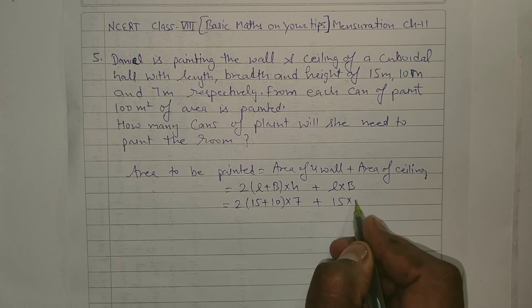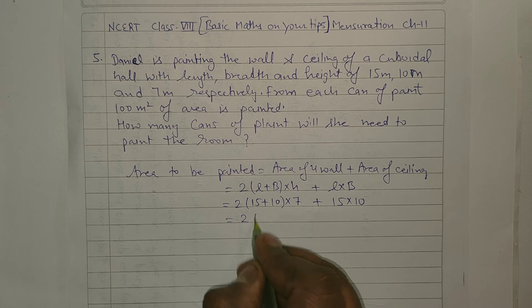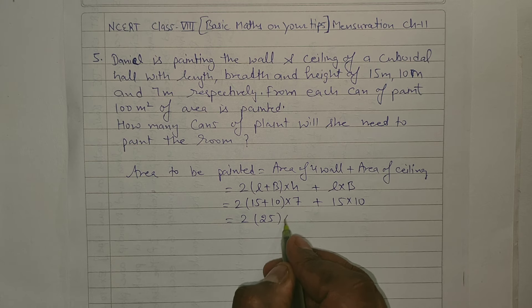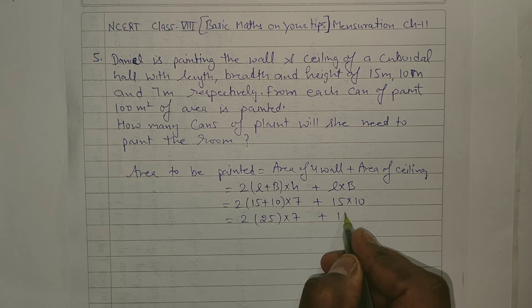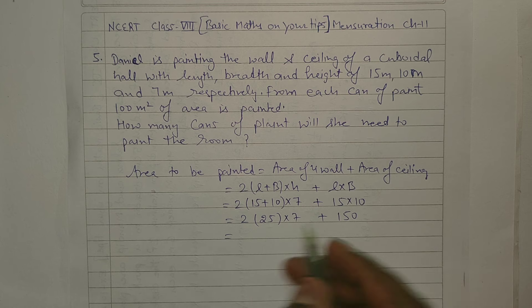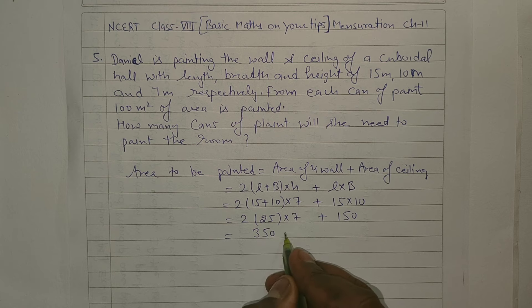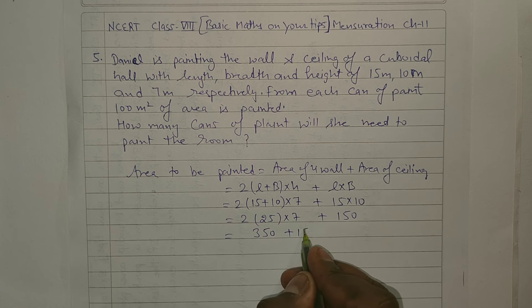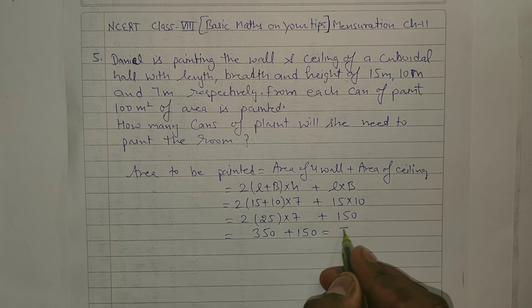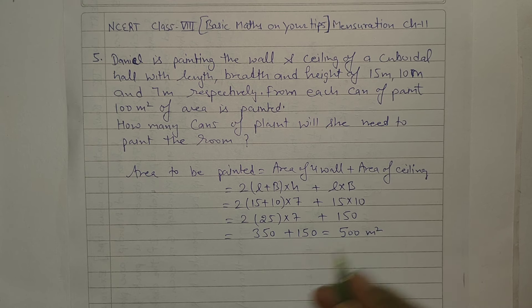For four walls we will put length 15 meter plus breadth 10 meter into height 7, plus L into B, which is 15 into 10. That gives us 2(25) into 7 plus 150, which equals 350 plus 150, so total area is 500 square meter.